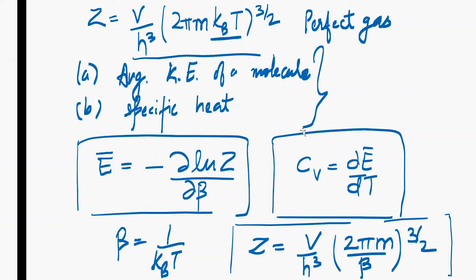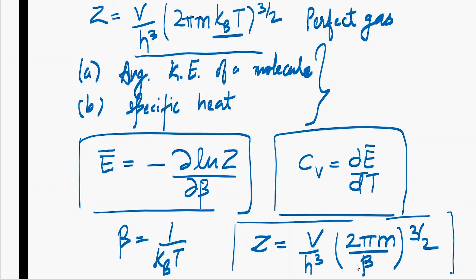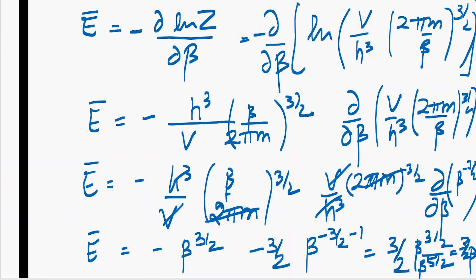First of all, we have to convert this whole relation into beta terms. So this is the partition function in beta terms by substituting kB T by beta. So this is our partition function, moving on to the next part.